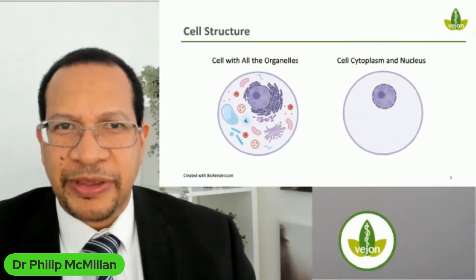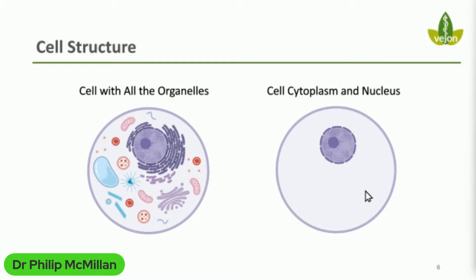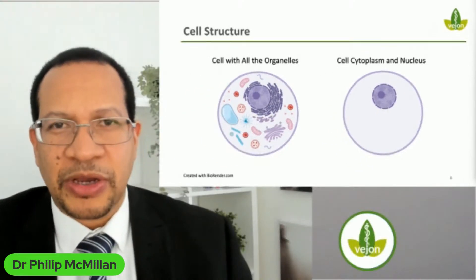To understand the cell structure, I have here an image of a cell with all its organelles: the nucleus, rough and smooth endoplasmic reticulum where proteins are made, lysosomes, and mitochondria. To simplify it in the viral context, you just need to understand two things: the nucleus, where all nuclear material is held and allows the cell to replicate, and the cytoplasm, where most of the cell's work occurs — where energy is produced and proteins are made.